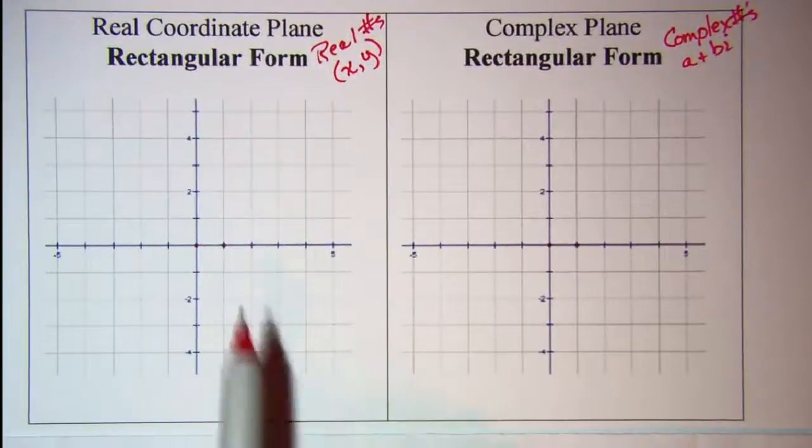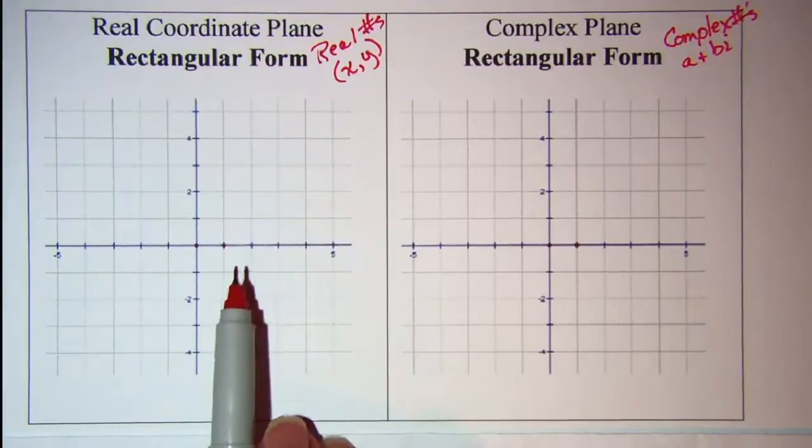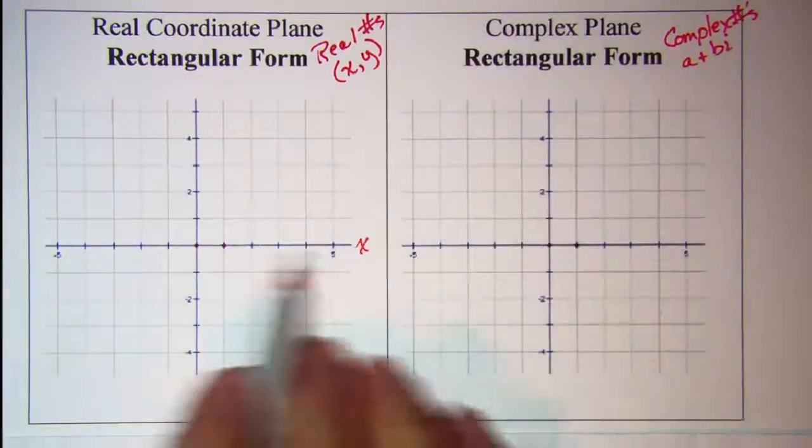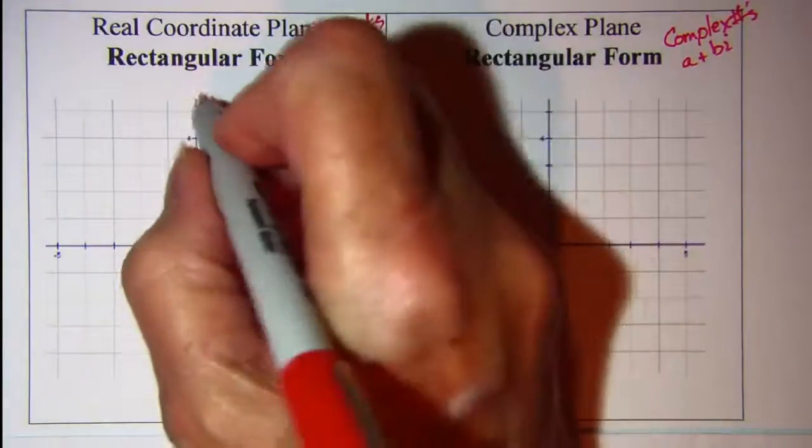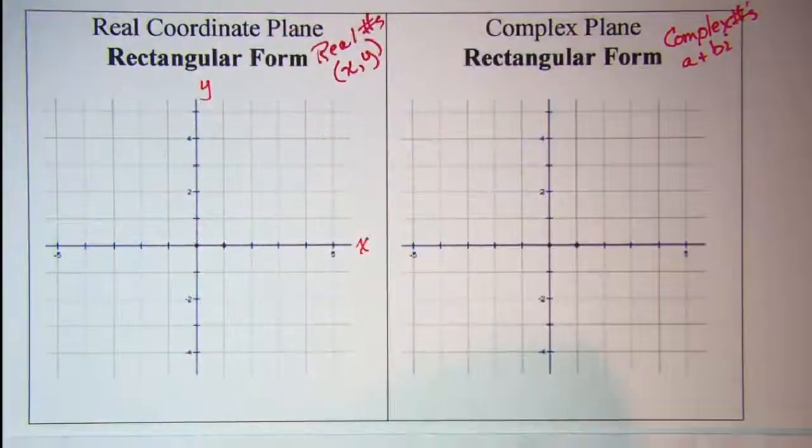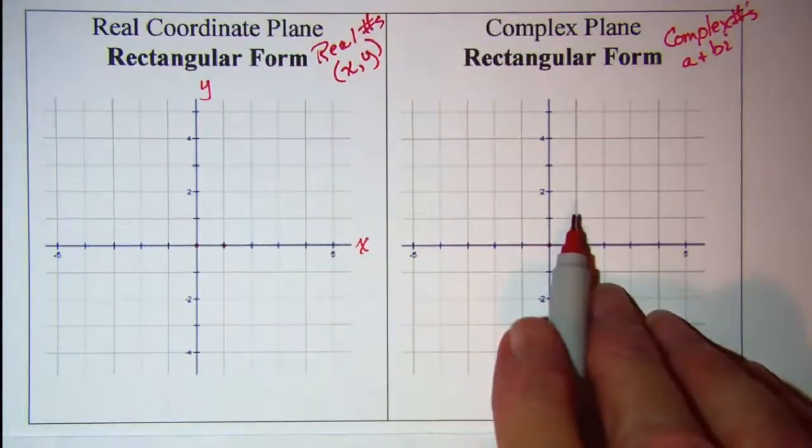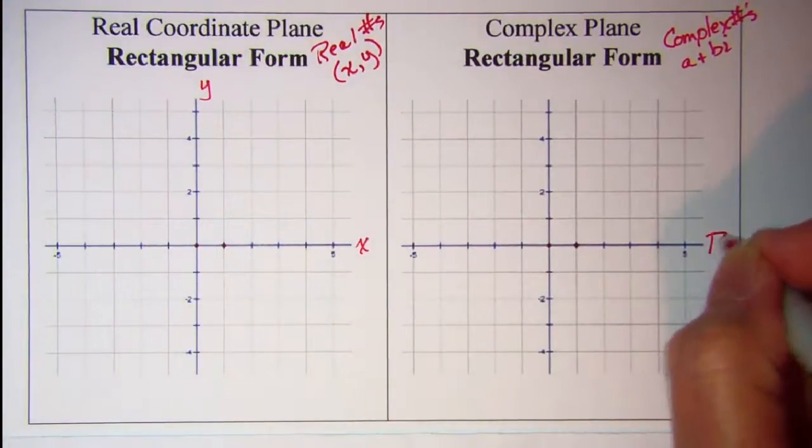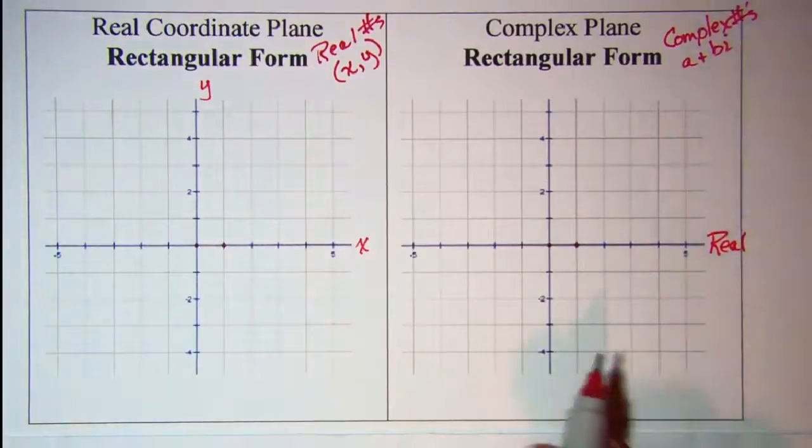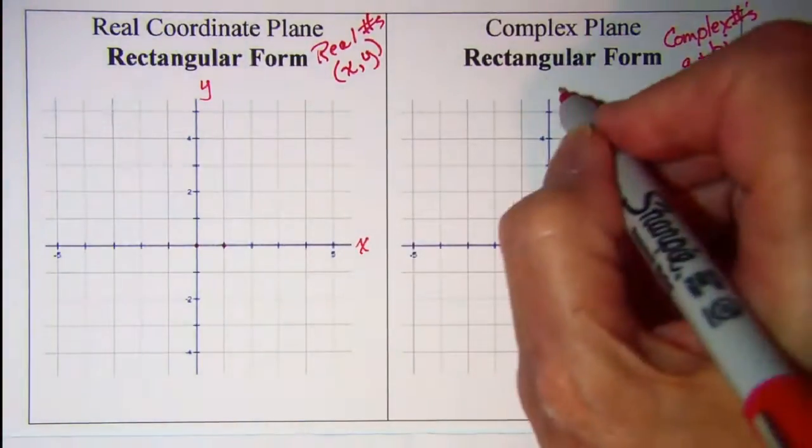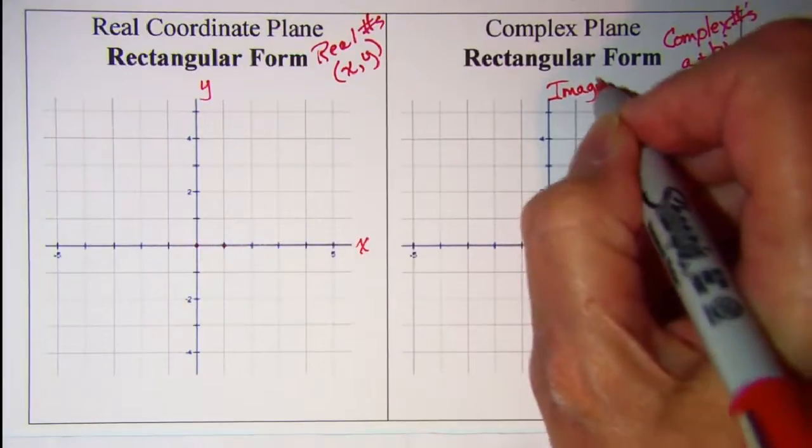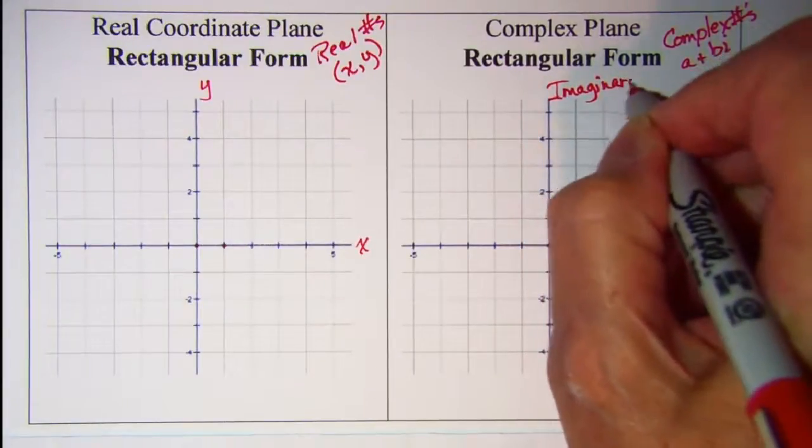On the real coordinate plane our axes are labeled with x as the horizontal axis and y as the vertical axis. On the complex plane our axis is labeled as a real axis on the horizontal axis and an imaginary axis for the vertical axis.